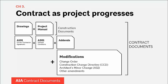Once the project is underway, the contract also includes any modifications agreed to during construction, including changes that affect compensation and/or schedule. These take the form of change orders, CCDs or construction change directives, changes that clarify scope only such as ASIs, or any other contract amendments both parties agree to and sign. Fundamentally they address issues of scope and time and compensation, or things that just change the scope without affecting time and compensation.